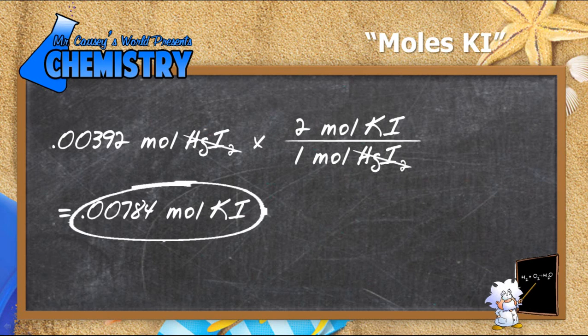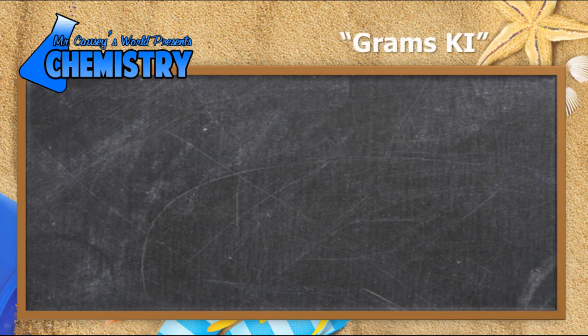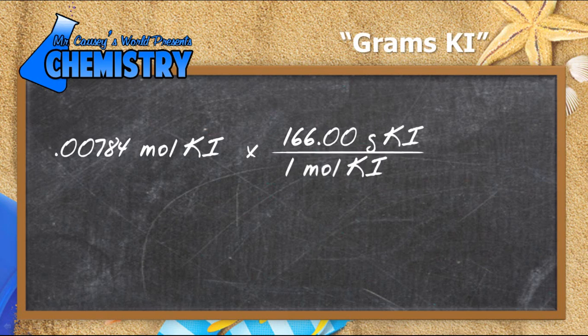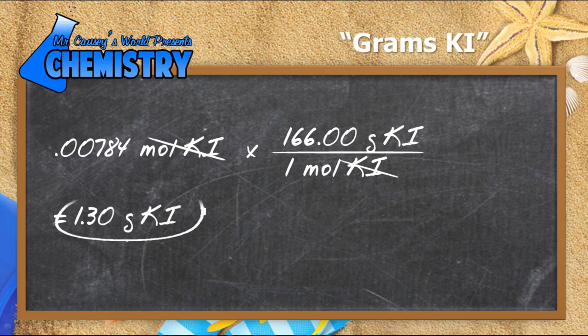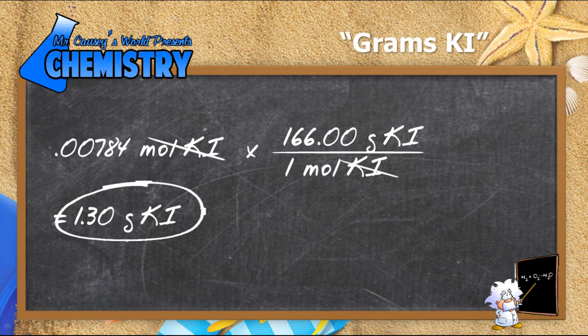My next step is to take the moles of potassium iodide and change it to grams of potassium iodide. We can do that pretty easily — just multiply by the molar mass and cross out our units. And voilà! We get our grams of potassium iodide. We have about 3 significant figures because of our original numbers.